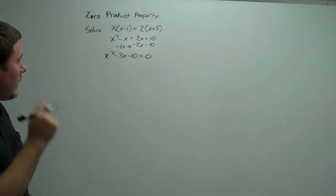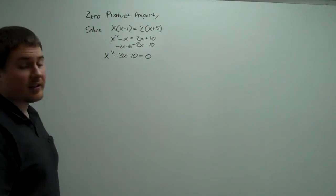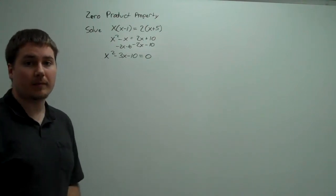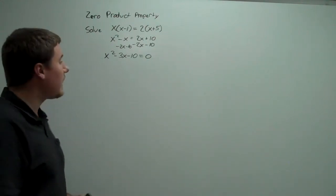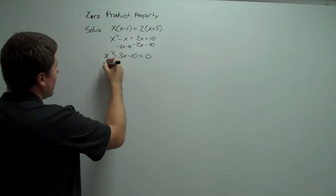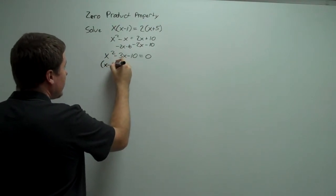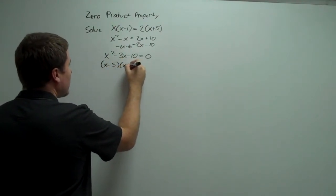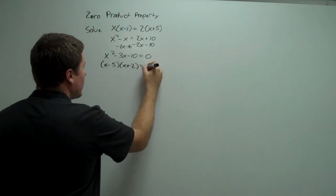It's at this point that we factor. So factors of negative 10 that combine to negative 3: negative 5 and 2. So x minus 5, and x plus 2, equals 0.